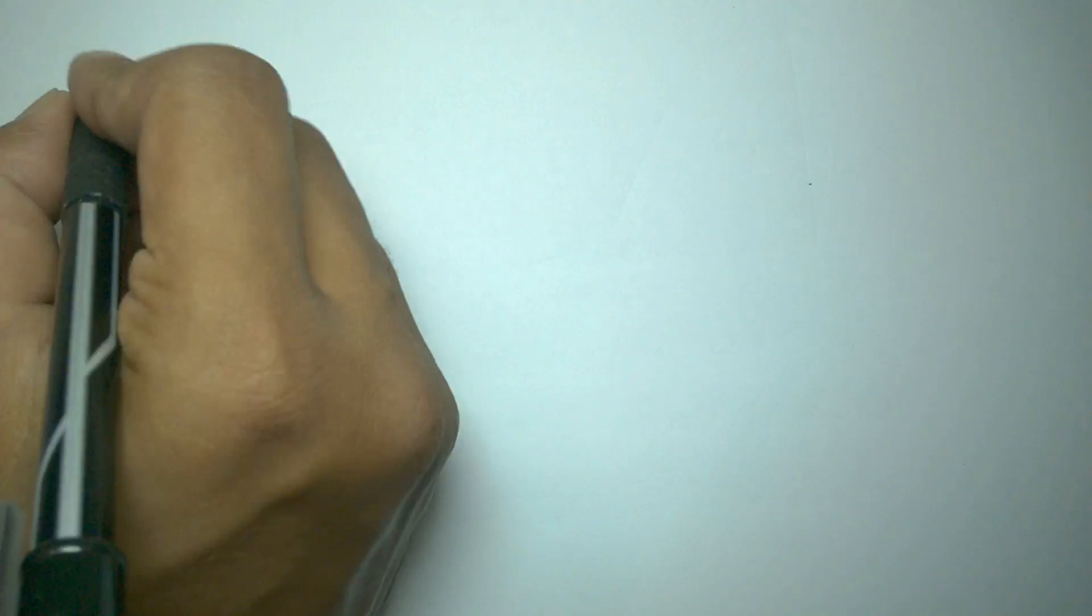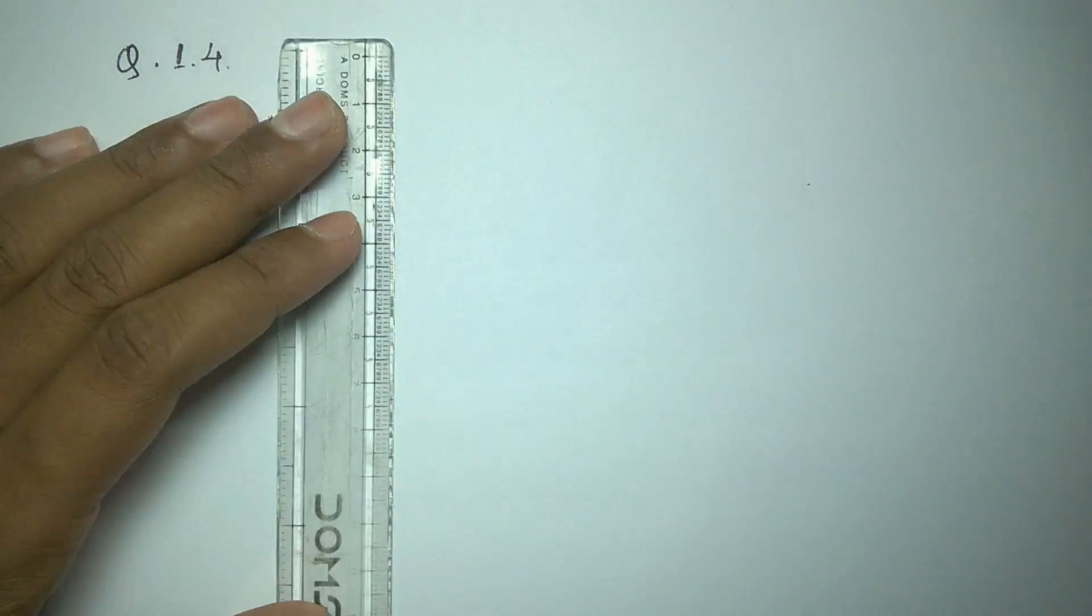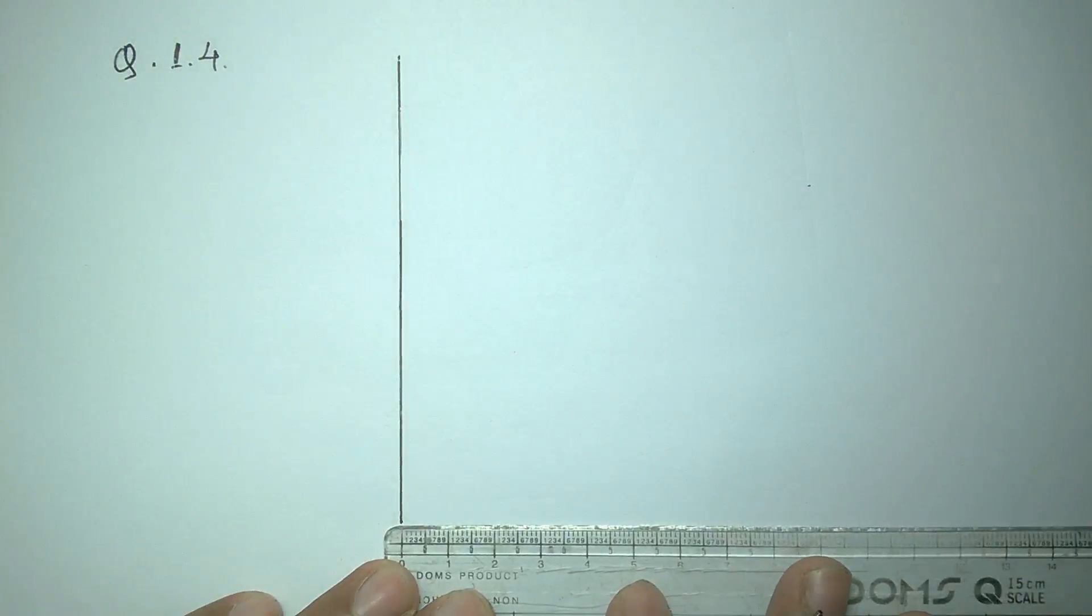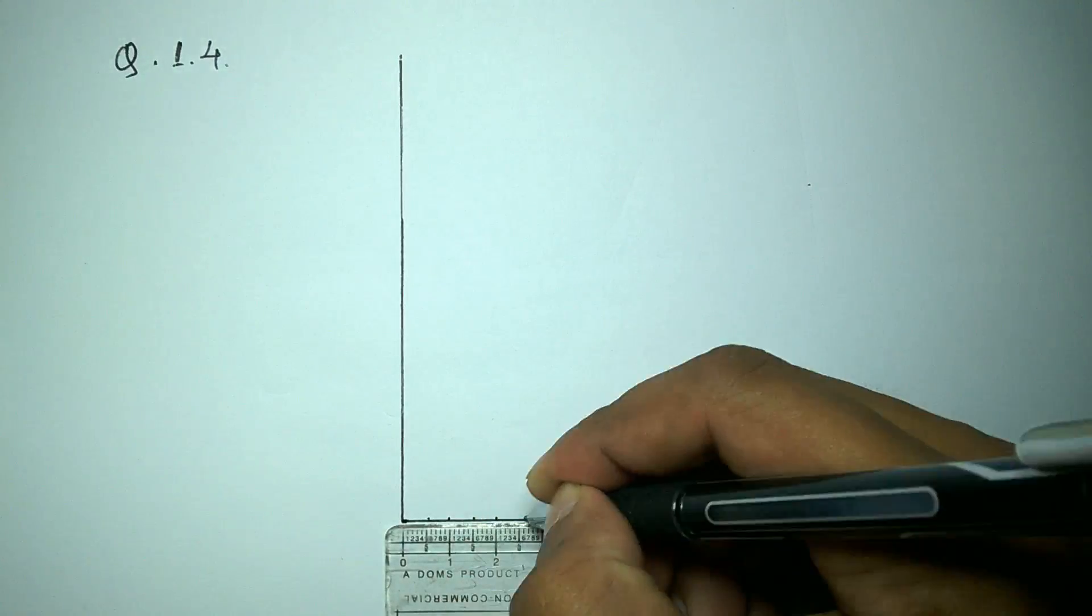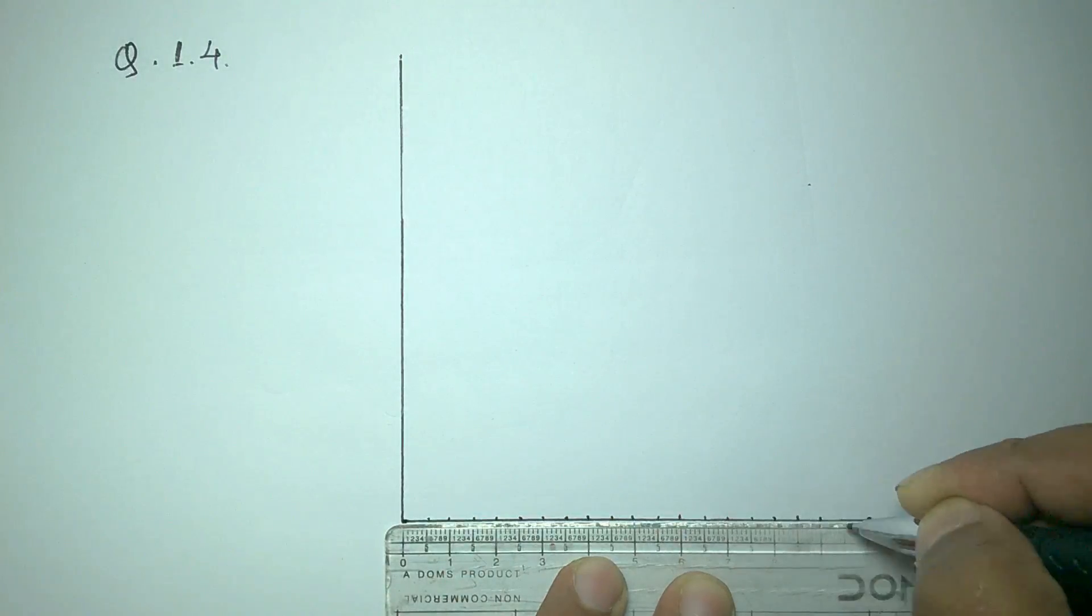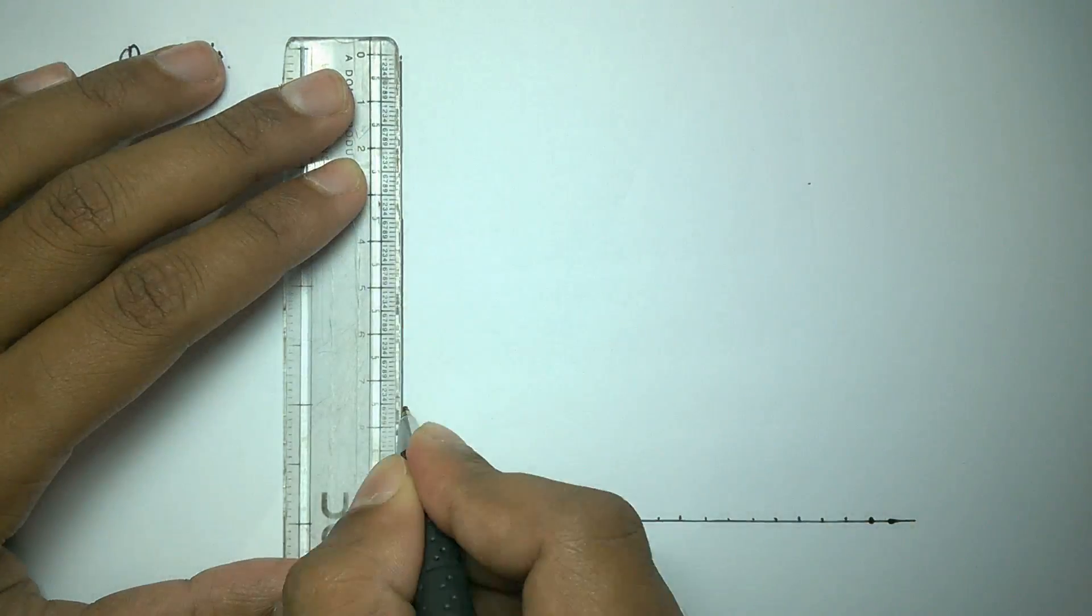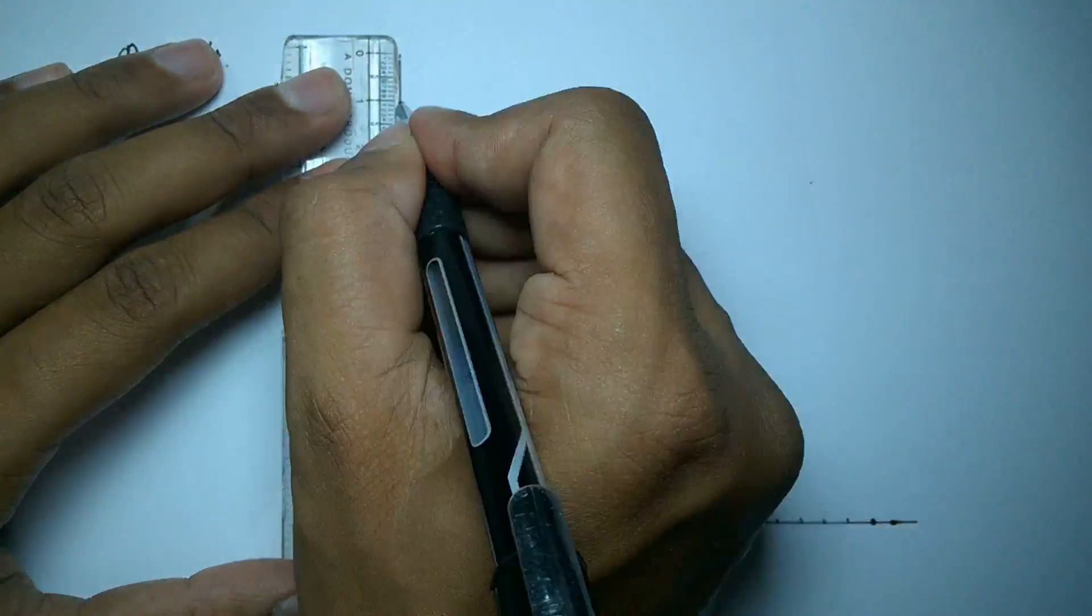Today we are solving question number 4 of chapter 1 of book IE Irodo. In the question we have been given a graph which is representing the movement of a particle in a straight line.